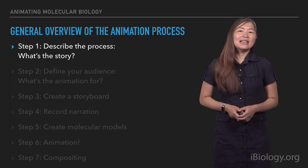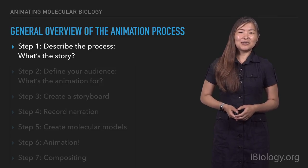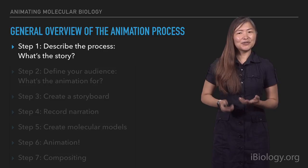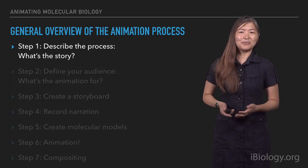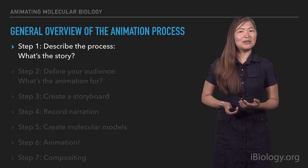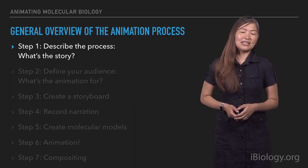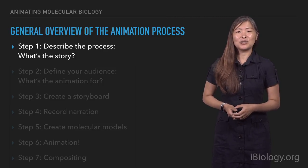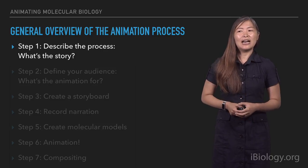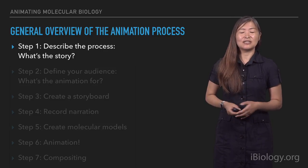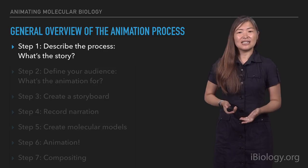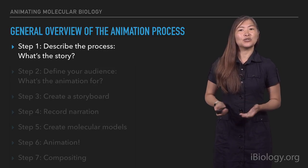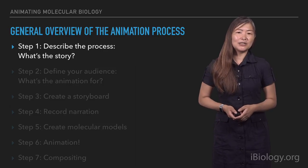So what are these steps? I'm going to walk you through the general animation process. The first step — similar to when you're creating any sort of model figure — is really describing the process. What's the story? In animation, you really have to do this in much more detail than you would if you were just drawing a figure. You need to ask: what's happening? Where is it in the cell? How many proteins are there? And what structures or other data may be available to tell that story?